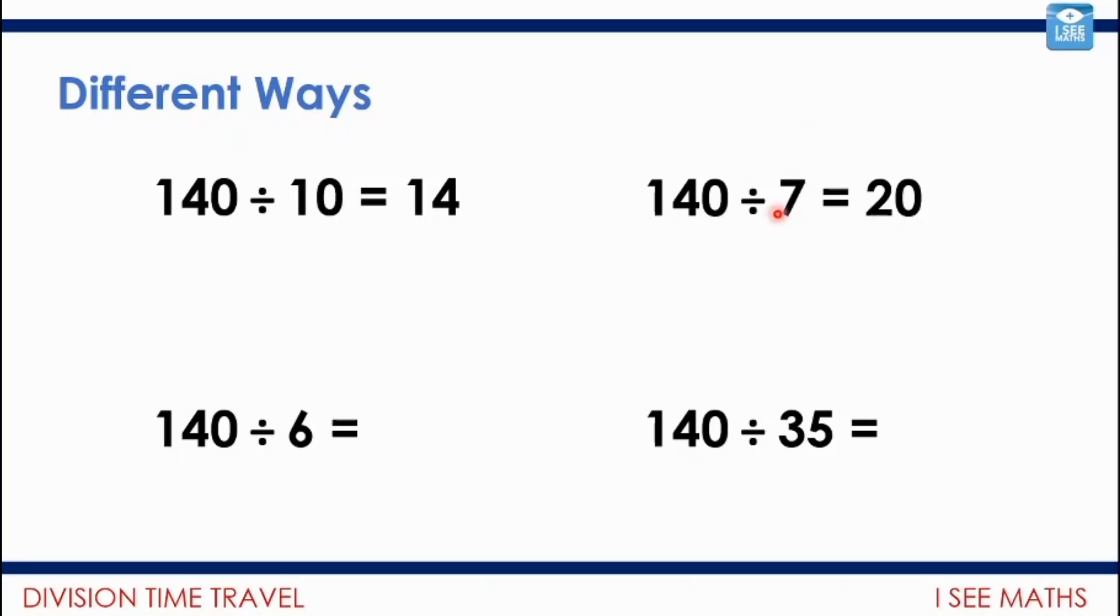If I was doing 140 divided by 7, I might just think, well how many 7s are in 140? I can use my times table knowledge. How many 7s in 14? There's 2. So how many 7s in 140? It must be 20. 20 times 7 is 140. But if I'm doing 140 divided by 6, I'm likely actually to use a written method all of a sudden, because I'm unlikely to know how many 6s are in 140. And it's 23 remainder 2.